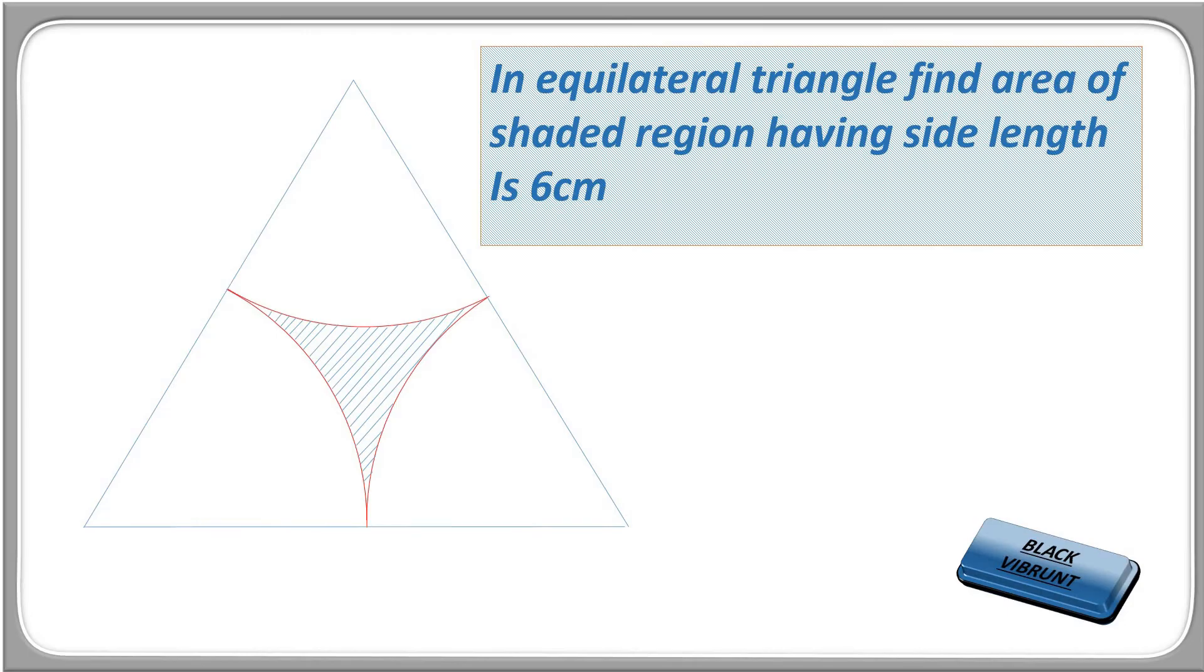Hello Mathematician. Question is: in an equilateral triangle, find the area of the shaded region having side length is 6 centimeters.